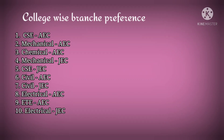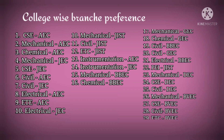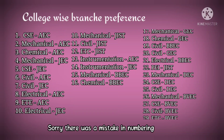The most important thing is college-wise branch selection. We prefer you set your preferences as follows: first AEC Computer Science and Engineering, second AEC Mechanical, third AEC Chemical, fourth JEC Mechanical, fifth JEC Computer Science and Engineering, sixth AEC Civil, seventh JEC Civil, eighth AEC Electrical, ninth AEC Electronics and Telecommunications. Before setting preferences to Instrumentation and Production Engineering, you should proceed to Jorhat Institute of Science and Technology (JIST).